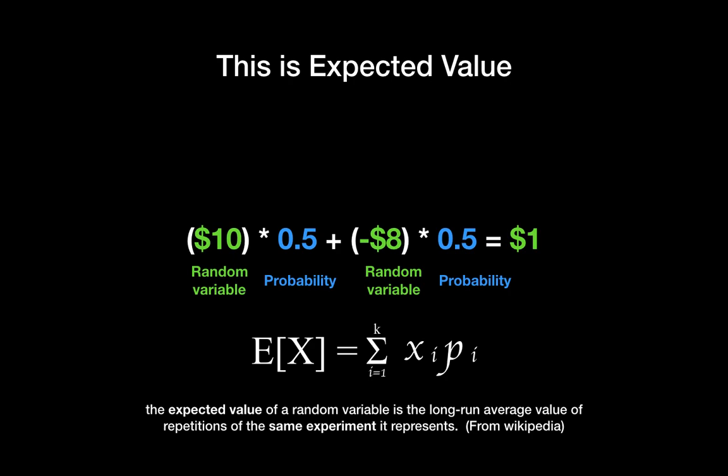The expected value is the long-run average value of repetitions of the same experiment — this definition is from Wikipedia. Because this coin tossing game only has two outcomes (front side or back side), it is a discrete random variable. In the discrete case, the expected value is exactly the same as the weighted average.